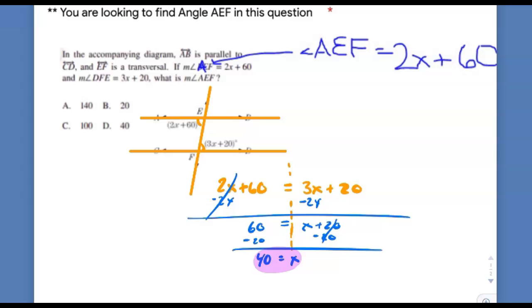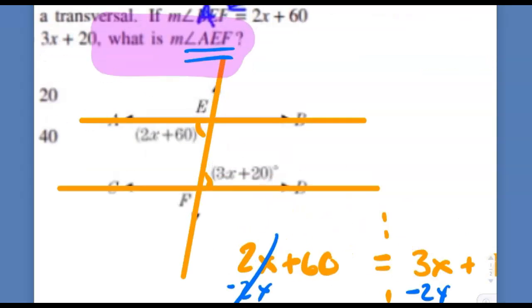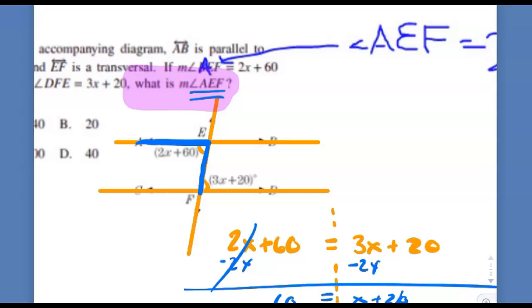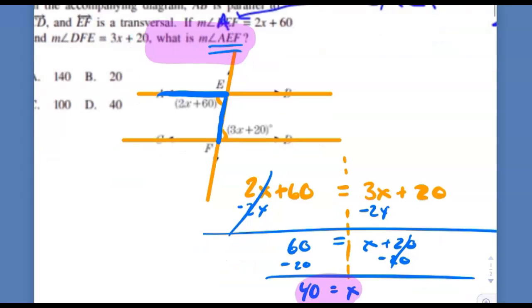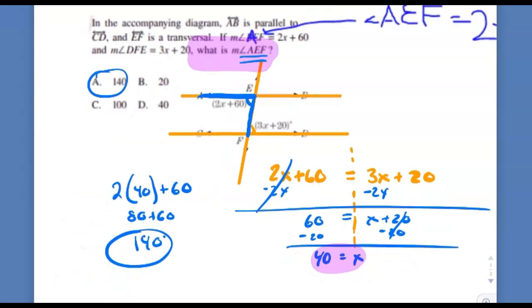What they actually asked you for was what is the measure of angle AEF. AEF is right here. So now that we know that x is 40, I'm gonna plug in 40 for x. 2 times 40 is 80, and 60 is 140. So this entire angle is supposed to be 140 degrees. The answer choice was A. Never trust the picture because it does look like it might be acute. Make sure they didn't say solve for x - always look at the actual question.